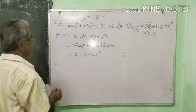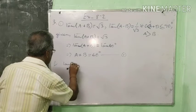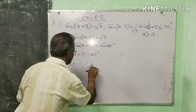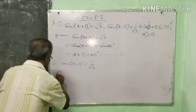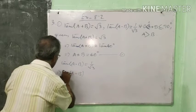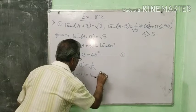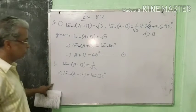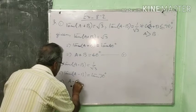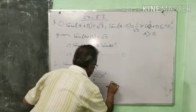The other equation given is tan(A−B) equal to 1 by root 3. The value of tan 30 degrees is 1 by root 3, so we write tan(A−B) equals tan 30 degrees. We get A−B is equal to 30 degrees. This is equation number 2.